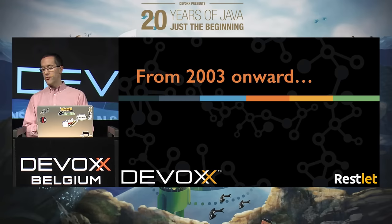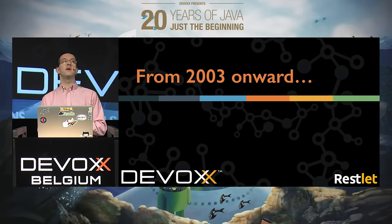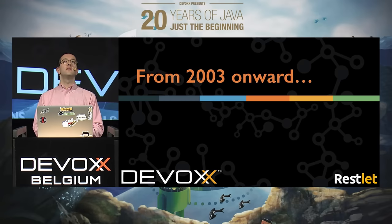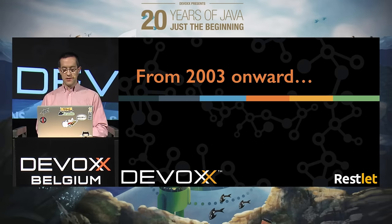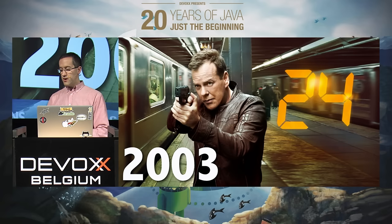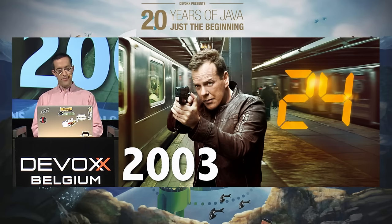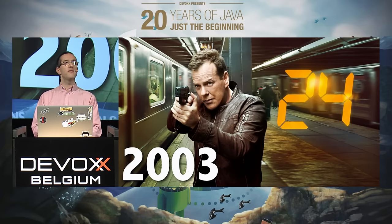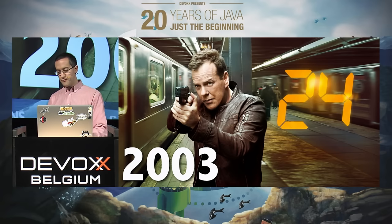We'll go through the history of the project and all the editions, its inceptions and features. If we look back into the past, in 2003, that's when Groovy was born.